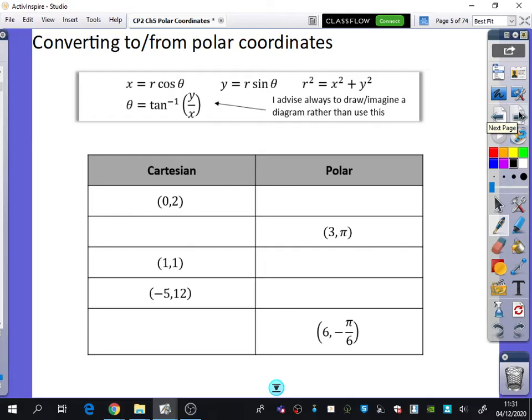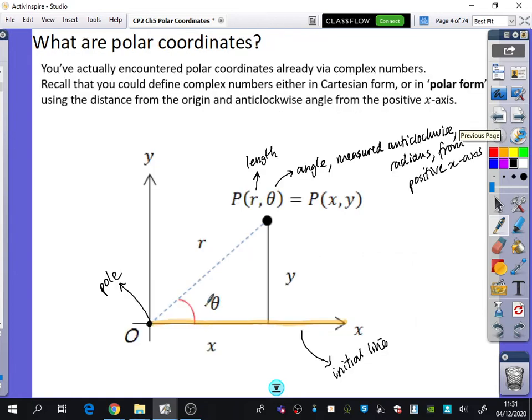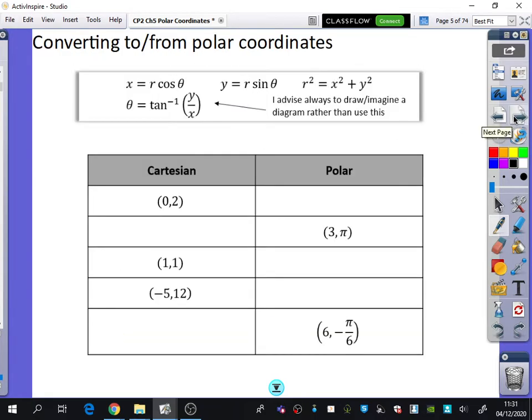I've also put here that if you wanted to find out what θ is, it's the inverse tan of y over x. Again, when you look back at that diagram, it's the opposite divided by the adjacent. But what I've written afterwards is I advise always to draw or imagine a diagram rather than using this formula, because if it falls in certain quadrants, the angle you just need to be really careful with. So it's worth actually drawing the diagram and figuring out what the angle is actually going to be.